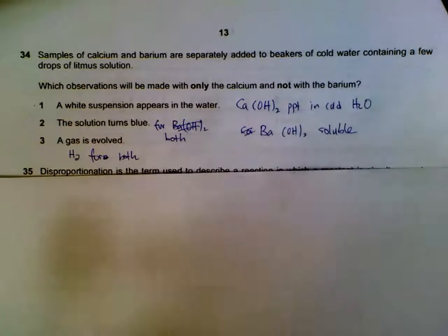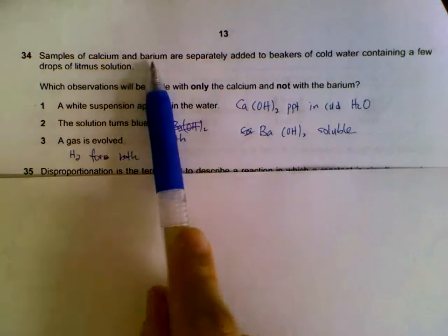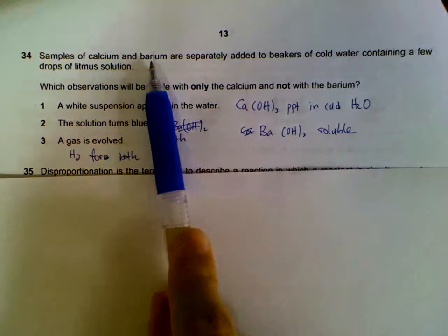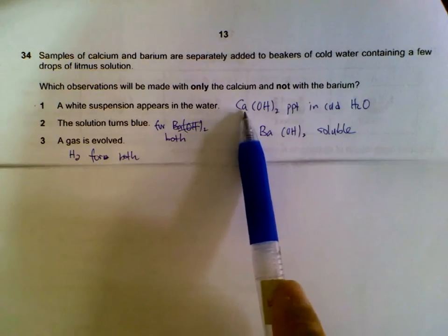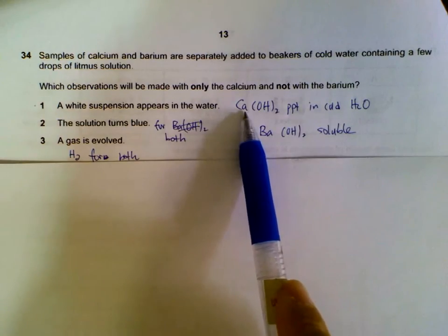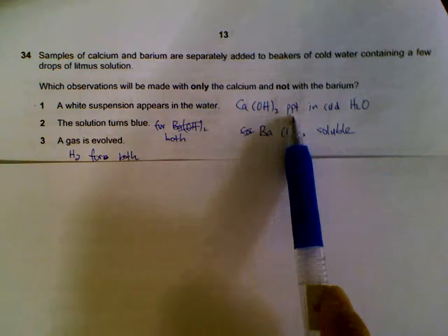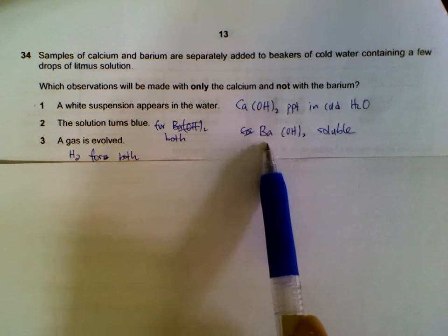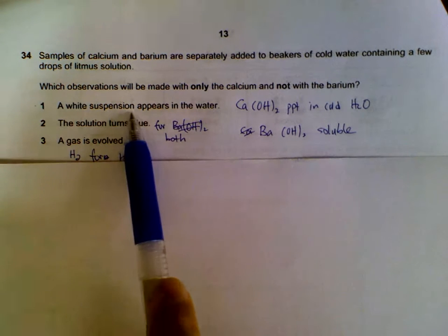Question 34. When we drop calcium into cold water, we will form calcium hydroxide and barium hydroxide. Part of the calcium hydroxide will not be soluble in the water. Part of it will dissolve, but part of it will not be soluble, so we will see a precipitate. Whereas for barium hydroxide, the solubility of Group 2 hydroxides increases down the group, so it's actually soluble in cold water.